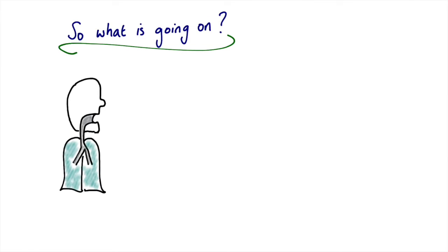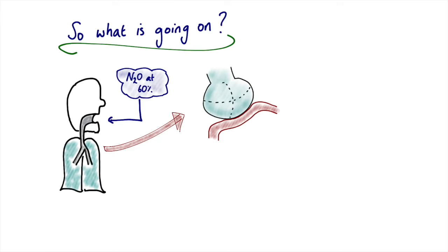Now let's consider the same patient, again focusing in on the alveoli and pulmonary capillary. But this time, our patient is breathing nitrous oxide at 60%. Now because nitrous oxide is so soluble in blood, there will be rapid diffusion of nitrous oxide down its concentration gradient into the pulmonary capillary.